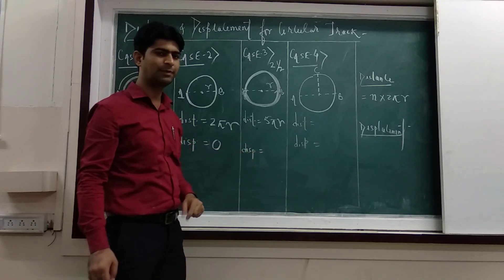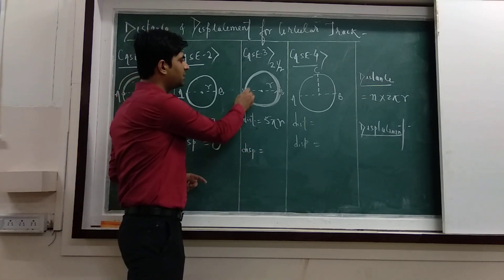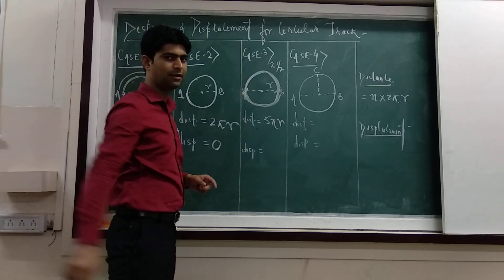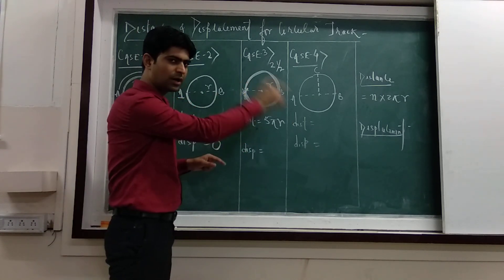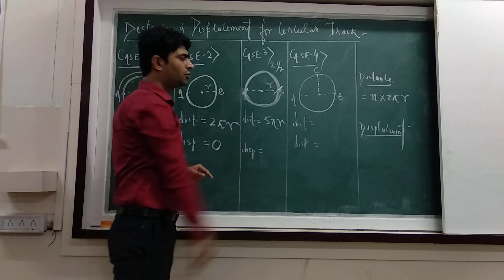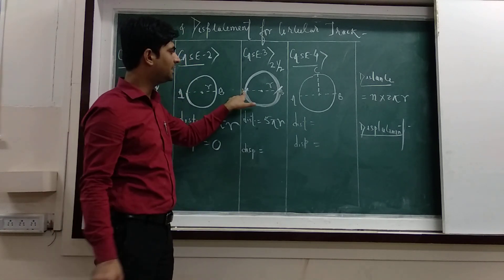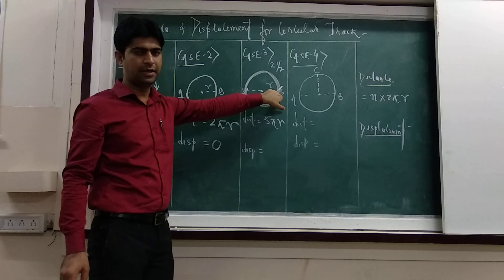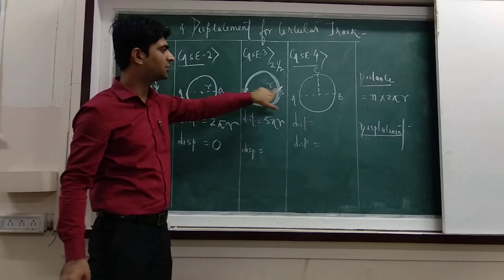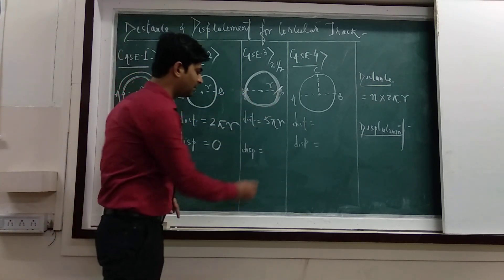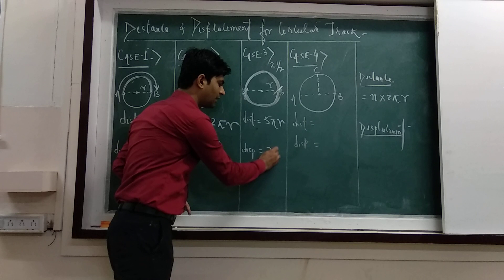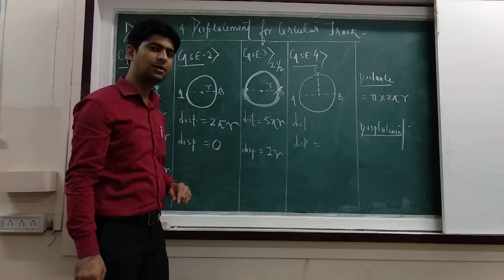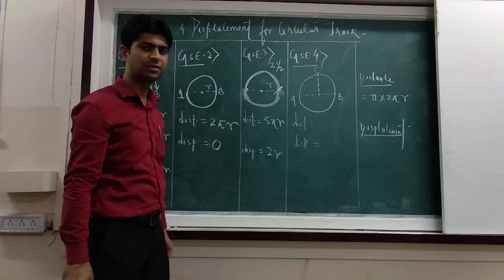Now what will be the displacement for case number 3? We started our journey from point A and after 2 and a half revolutions we reach point B. So the initial point is A and the final point is B. The displacement will be the shortest route between them, which is the diameter. So the displacement will be 2r, the diameter of the circular path. This is case number 3.